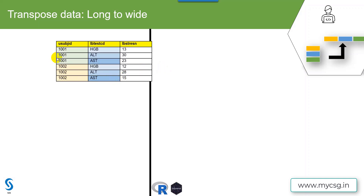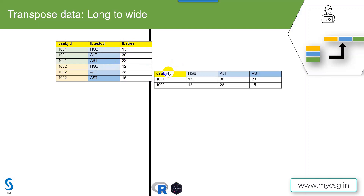Let us say we have a dataset in which there is one record per subject per lab test CD. There are three records: on the first record the LB test CD is HGB, the second record it is ALT, and the third record it is AST for subject 1001. In the variable called LBSTRESN, we have the results associated with those tests. We want to organize this data into a format with one row per subject and a separate column for each of the tests.